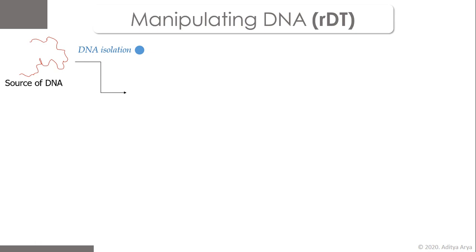Apart from phenol-chloroform-isopropanol, silica-based methods are also used for DNA isolation. Once the DNA isolation has been done and its quality has been checked, we identify the specific region of DNA we want to recombine — this is known as the gene of interest. Gene identification can be done by hybridization, PCR-based detection, or probe-based detection.